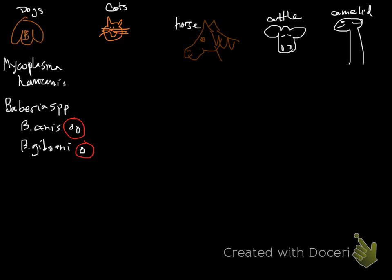So those are the two main red cell parasites in dogs. In cats, cats also have a Mycoplasma — the main one, which used to be called the large form, is Mycoplasma hemophilus. Some people still call this Hemobartonella felis but that name is not used anymore. There are other types of mycoplasmas that can cause anemia, but this is the big one.